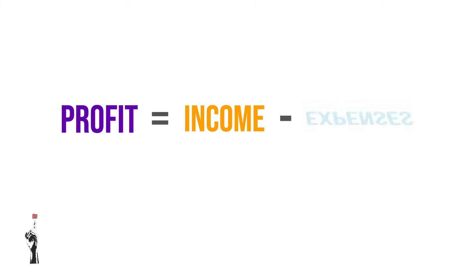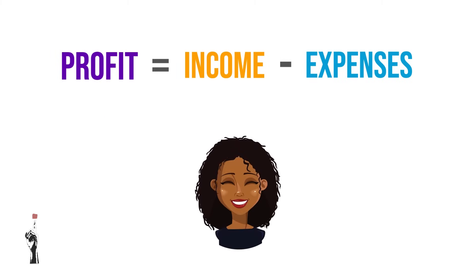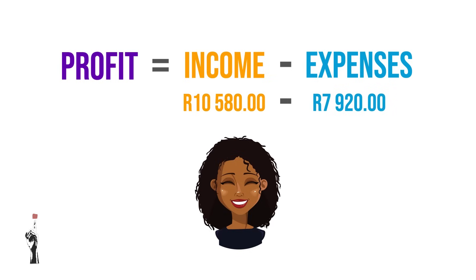Now that you know the difference between income and expenses, we can discuss profit. The profit formula is very simple: profit equals income minus expenses. Let's say Brenda had a wonderful month with a total income of 10,580 rand. She deducts her total expenses of 7,920 rand, giving a profit of 2,660 rand.